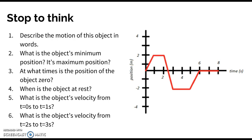Then for one second you stay at that two meter position, then retract back to two meters behind the stop sign in one second at a constant rate. You stay behind the stop sign for two seconds, then run back to the stop sign at a constant rate. The object's minimum position is negative two meters and its maximum position is positive two meters.